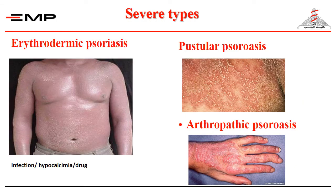Other severe forms include erythrodermic psoriasis, which affects most of the body. There are large amounts of scales due to hypoproteinemia, as the scales are composed of keratin protein. Erythrodermic psoriasis is usually precipitated by infection, hypocalcemia, or some drugs, and is a serious condition that necessitates systemic treatment. There is also pustular psoriasis, where the body is covered by minute pustules, which also requires systemic treatment. Sometimes psoriasis affects joints, especially the small joints of hands and feet, causing severe pain — this is arthropathic psoriasis.